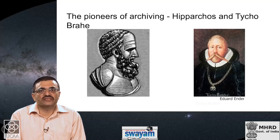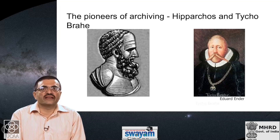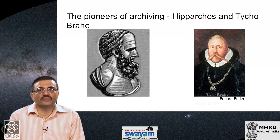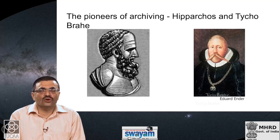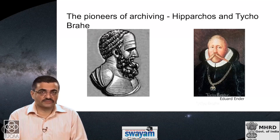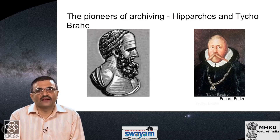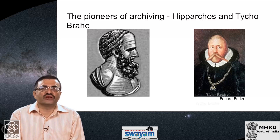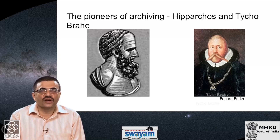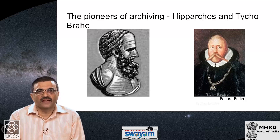The next important person in regularized, systematized recording of astronomical information is the Danish astronomer Tycho Brahe. Tycho was interested in cataloging the positions of the naked-eye planets as a function of time relative to the fixed stars. Over the years in the late 1500s, using his own observatory, he made many, many observations of the positions of the planets in the night sky.